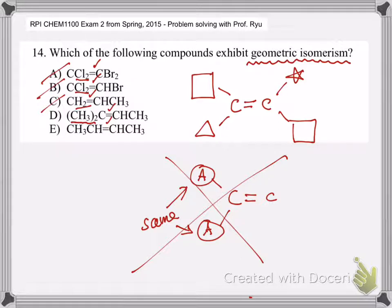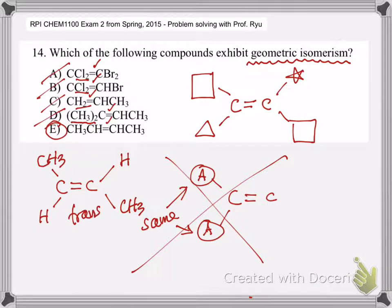This one is the answer. You have a C double bond with methyl attached to it and the other side must be hydrogen. You can have CH3 and CH3 on this side and H on the other side. You have two different geometric isomers and the answer for this one is E.